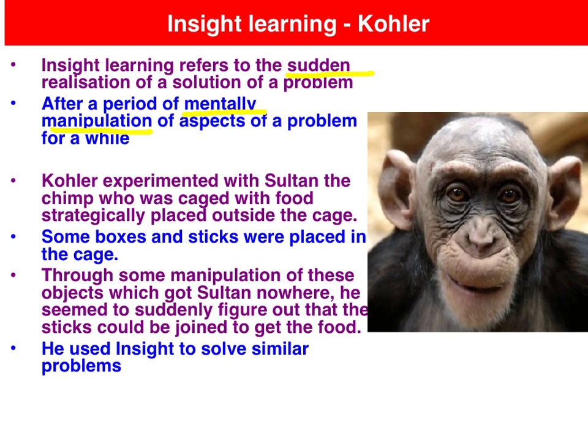Sultan spent a period of time data gathering, trying different strategies to get the bananas. After a while he gave up, and then during this sulking moment when all had seemed lost, he suddenly seemed to have an aha moment in which he figured out the problem. He got a fat stick and a thin stick, put the two together — one fit in the other perfectly — and then he literally pulled the bananas in using his extended telescope-like apparatus of the two bamboo sticks. Sultan seemed to use the insight gained from this experience to solve similar problems.